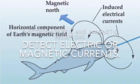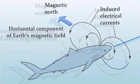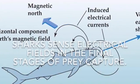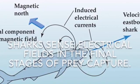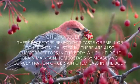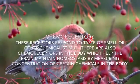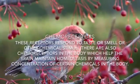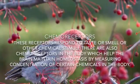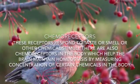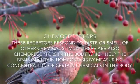Electromagnetic and magnetic receptors detect electrical currents or magnetic currents. For example, sharks sense electrical fields in the final stages of prey capture. Chemoreceptors respond to taste, smell, or other chemical stimuli. There are also chemoreceptors in the body which help the brain maintain homeostasis by measuring the concentration of certain chemicals in the body.